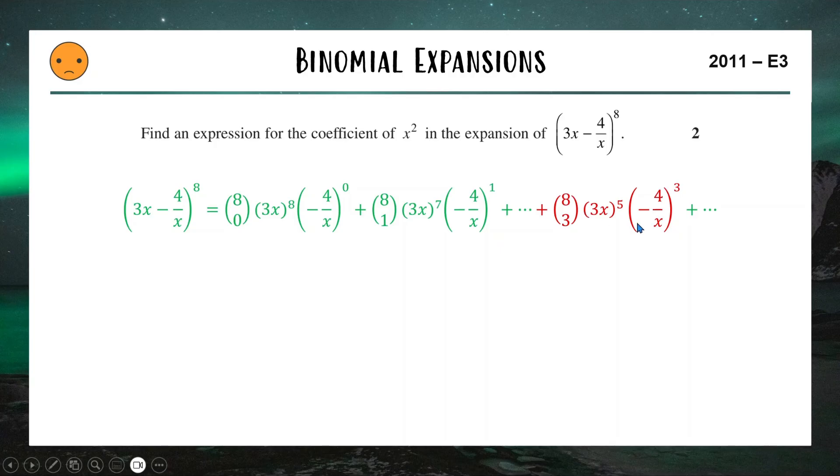So let's just simplify this term and see what it works out to be. We have 8c3, which is 56. We have three to the power of five, which is 243. And then for my second term, I've got four cubed, which is 64. Negative is still negative and x cubed is x cubed. So just calculating all this by doing 56 times 243 times 64, that's going to get me 870912. I've got an x to the power of five on the top of the fraction and an x cubed on the bottom, and I'm just putting the negative out the front. Simplifying my x terms is going to give me an x squared, which then tells me that my coefficient of x squared in this expansion is negative 870,912 for two marks.